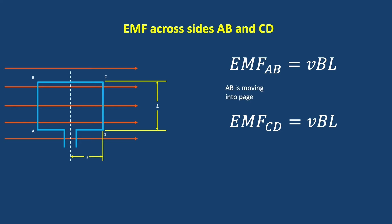AB is moving into the page, and so positive charge is being pushed towards the A side of that line. How do we know? We take our right hand palm rule, we take our fingers, we point them in the direction of the field lines. We take our thumb, we point it in the direction that line segment AB is moving, which is into the page, and our palm pushes down on the positive charge towards the A side of that coil.